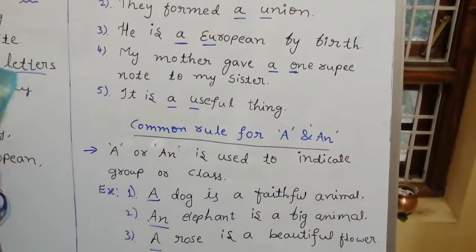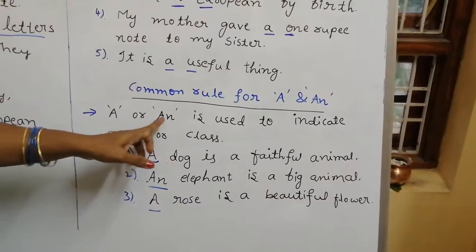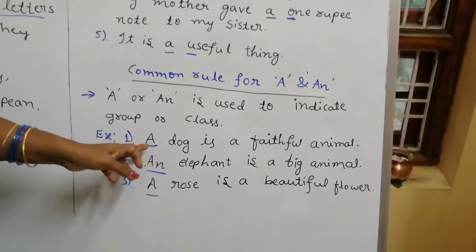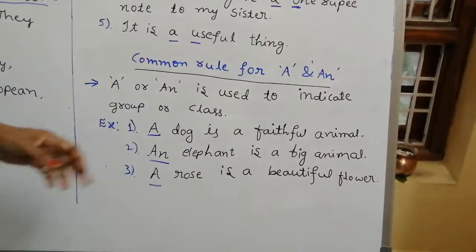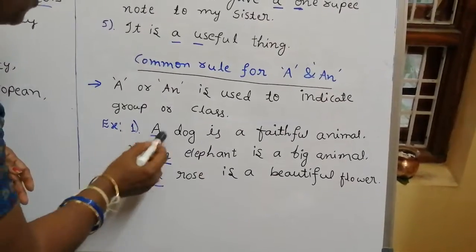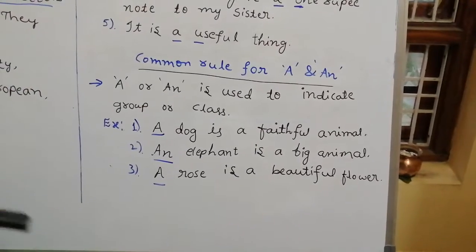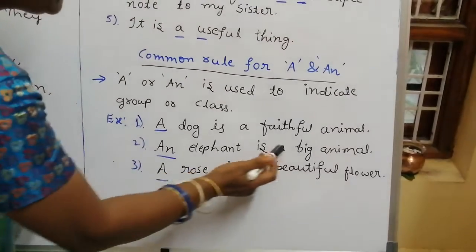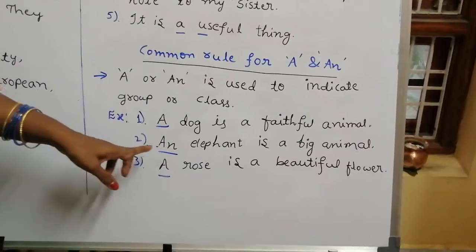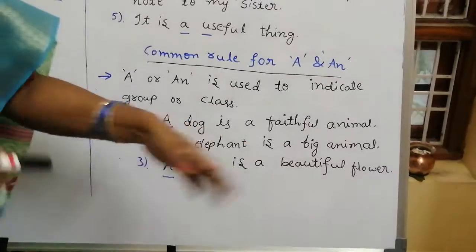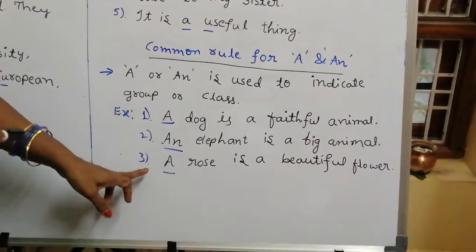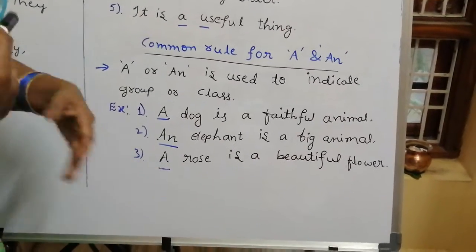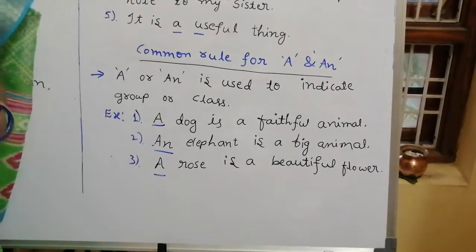Common rule for A and AN: A or AN is used to indicate a group and class. For example, 'A dog is a faithful animal' — here, A does not mean one dog; it means all dogs are faithful animals. 'An elephant is a big animal' — not about one elephant; all elephants are big animals. 'A rose is a beautiful flower' — not about one rose; all roses are beautiful flowers.